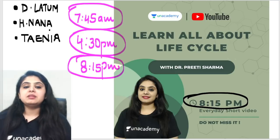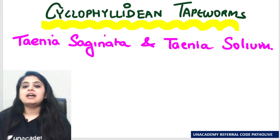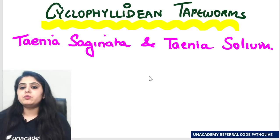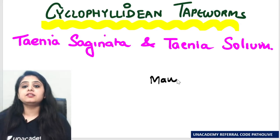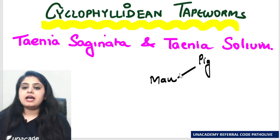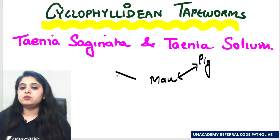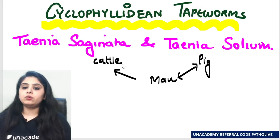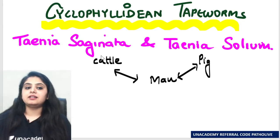Let me begin with the life cycle of Taenia saginata and Taenia solium. Both will definitely involve man, but Taenia solium is between man and the pig, and Taenia saginata is between man and the cow or the cattle. So please remember: Taenia solium is man and pig; Taenia saginata is man and cattle.